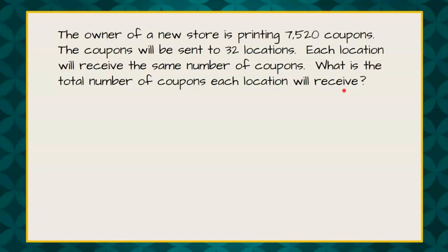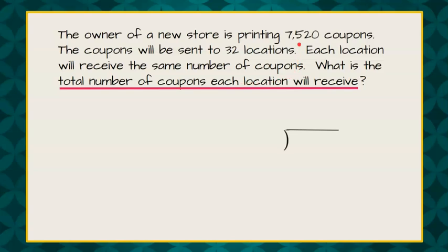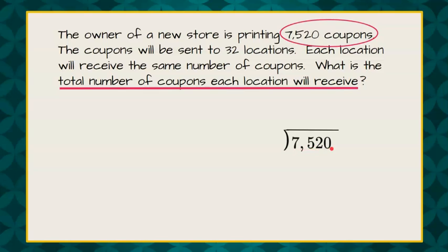Please pause now and return when you're done. Welcome back. We're going to start by understanding that we need to find the total number of coupons that each location will receive. We know that we have a total of 7,520 coupons to 32 locations, so we need to divide. When we divide, we're going to take our whole — what we start with — and that is going to be our dividend. That is what we are dividing up, so our dividend is 7,520. We are then going to determine that 32 is our divisor. We're going to take these coupons and divide them equally into 32 locations, so the divisor is 32. So 7,520 divided by 32.